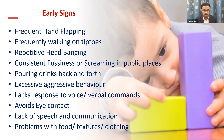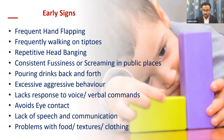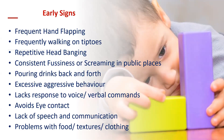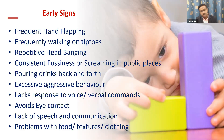Excessive aggressive behavior is common. There is also a lack of response to voice or verbal commands — for example, if you call a child's name, they won't even acknowledge you. Lack of response to voice or verbal commands, avoiding eye contact, and lack of speech and communication are common symptoms and signs.